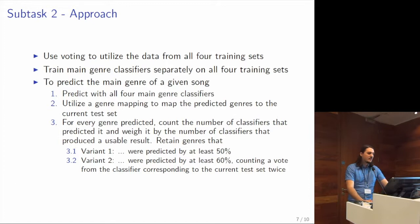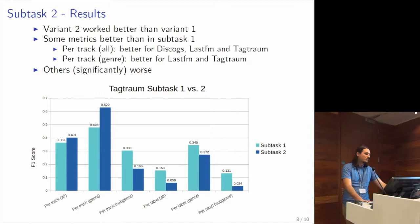We used two different variants for deciding if we retain a genre. The first was simply requiring at least 50% of the classifiers producing that genre. The second variant was requiring 60%, but counting the vote of the classifier trained on the same dataset as the test set twice, so basically two votes. We saw that variant two worked better than variant one, so 60% with double votes were better.